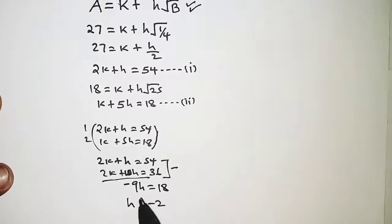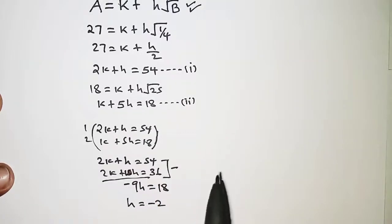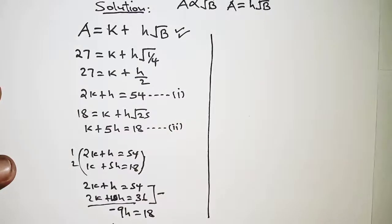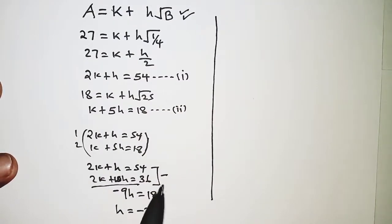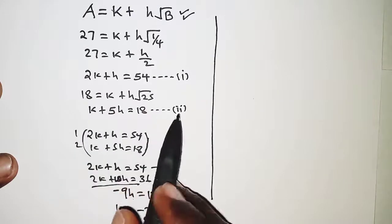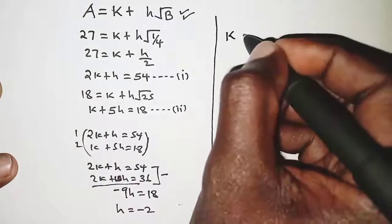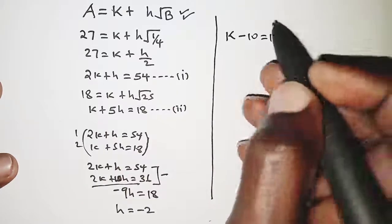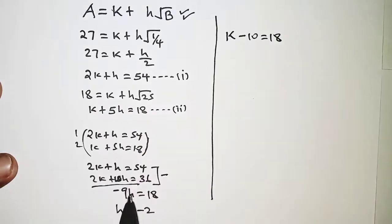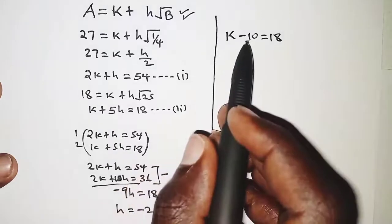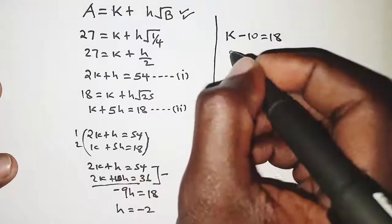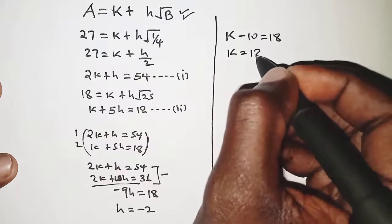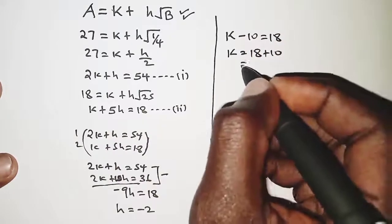From there we are going to substitute the value of h in the second equation, and that should give us: h is negative 2, and applying it in equation 2 we are going to have k minus 10. We simply have 5 times h, and h is negative 2, so that is 5 times negative 2 which should give us negative 10. The value of k should be 18 plus 10, that is 28.